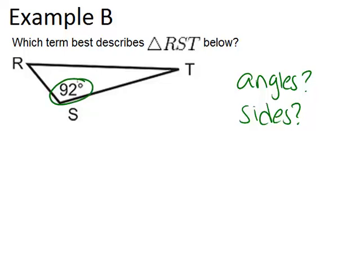we have 92 degrees as marked, and 92 degrees is an obtuse angle. Any time a triangle has an obtuse angle, that means it's an obtuse triangle. So this is an obtuse triangle.